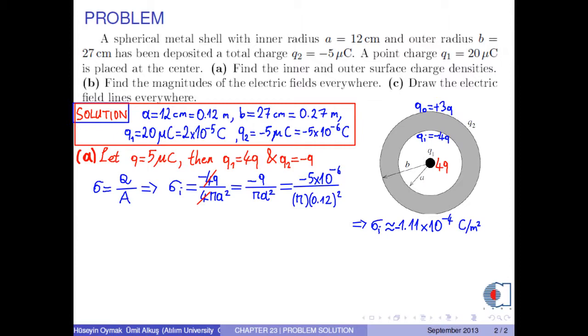Similarly, the outer surface charge density sigma O has the form 3Q over 4 pi B squared. If we substitute the numerical values into this formula, we obtain the outer surface charge density as approximately 1.64 times 10 to negative 5 C per meter squared.